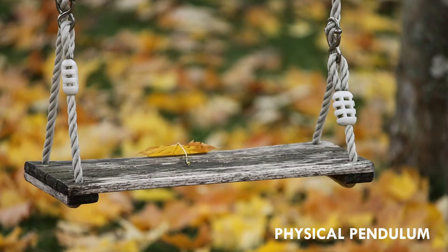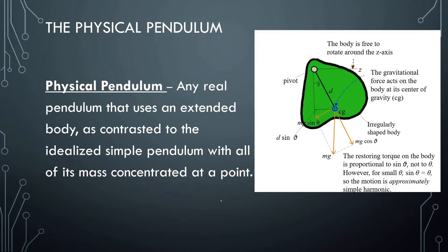Welcome back everybody. Today we're going to be talking about physical pendulums. It can pretty much be anything that's oscillating back and forth like a pendulum, but it's not going to have that simple pendulum where it's just a string and a mass all the way at the end. Something like a swing set or even lamps swinging back and forth — anything can be a physical pendulum. A physical pendulum is any real pendulum that uses an extended body, as contrasted to the idealized simple pendulum with all of its mass concentrated at a point.